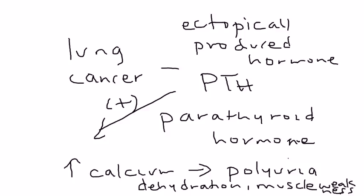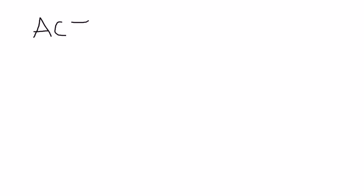Those are a couple of quick examples of paraneoplastic syndromes. There is a long list — maybe as many as 20. But in this video, I'm going to concentrate on the most high-yield ones: two paraneoplastic syndromes that produce two hormones — ACTH and ADH.